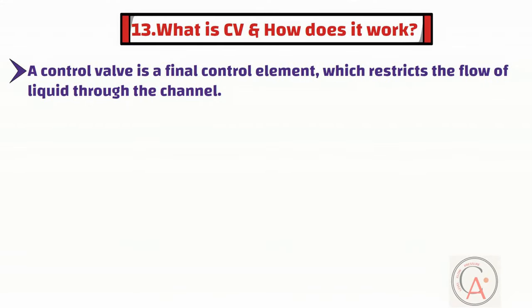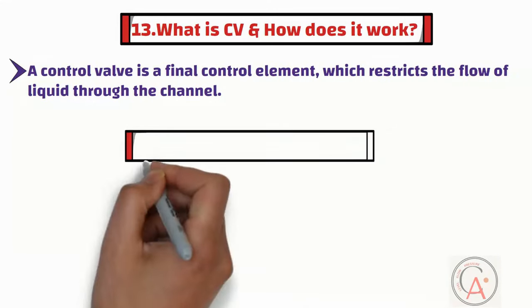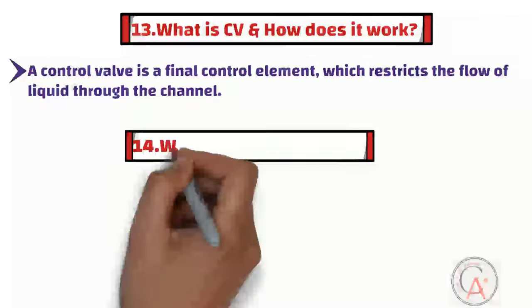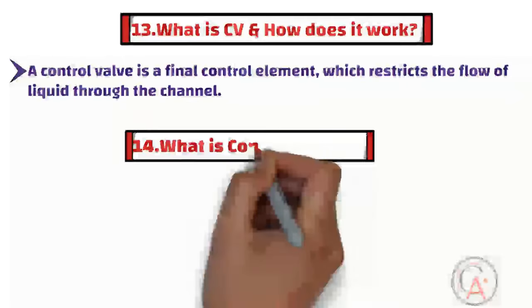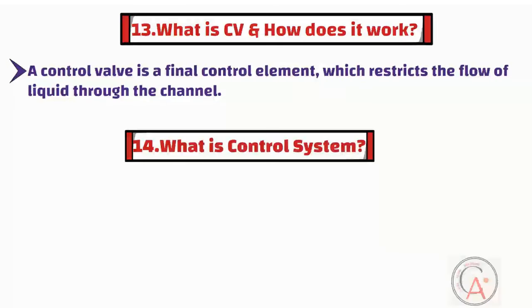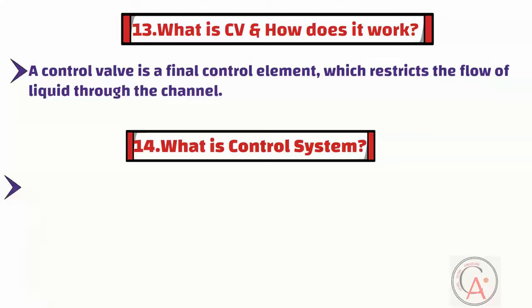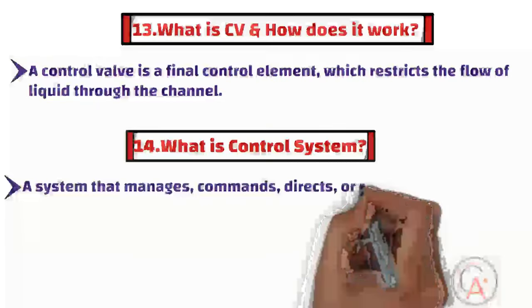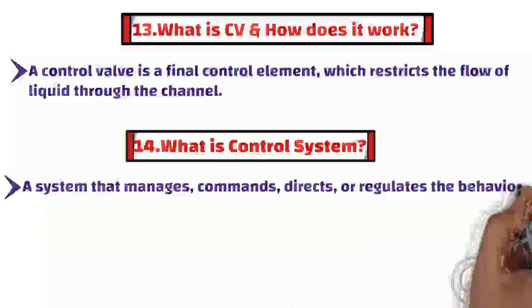The fourteenth question is: what is a control system? A control system is a system that manages, commands, directs, or regulates the behavior of other devices or systems to achieve desired outcomes or results.